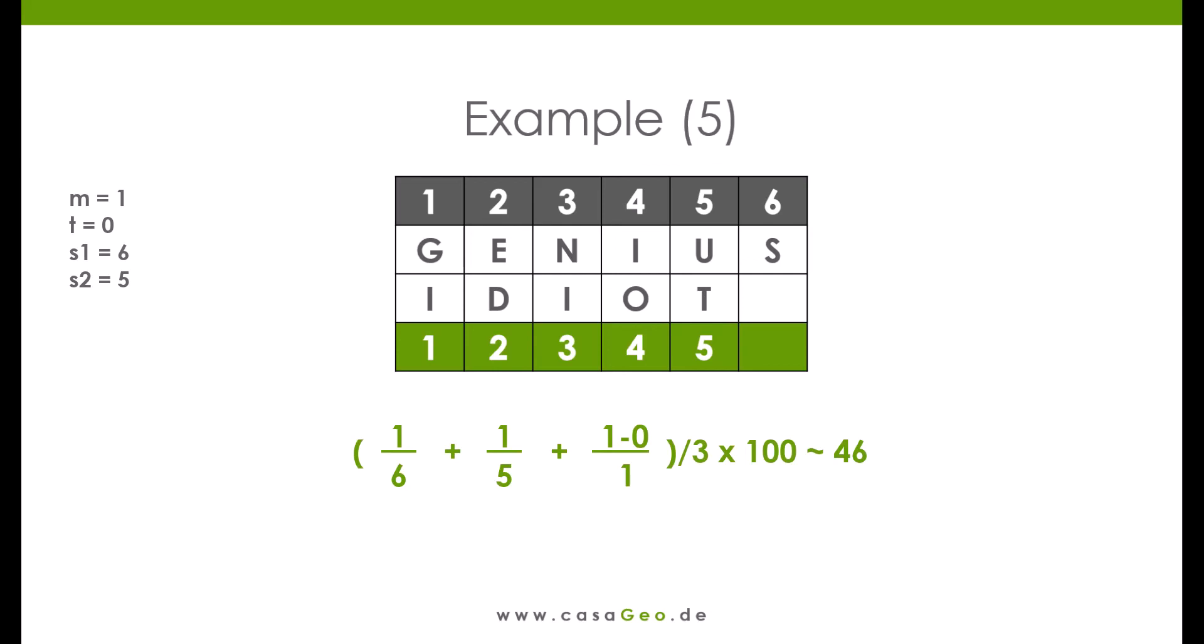Briefly, how does the score come about? Genius is six characters long, so the same letters may differ by two positions. With the letter I the third position in idiot and the fourth position in Genius, we have found a suitable letter for calculating the score.